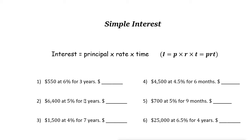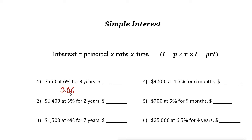Let's take a look at the problems. It says five hundred fifty dollars at six percent for three years, so we're looking for the interest. The principal is five hundred fifty dollars, the rate is six percent — written as 0.06 — and the time is three years.